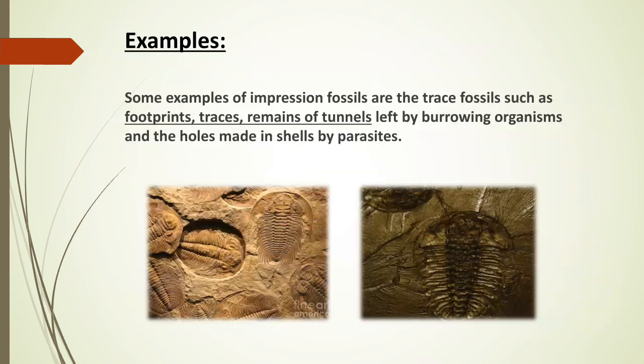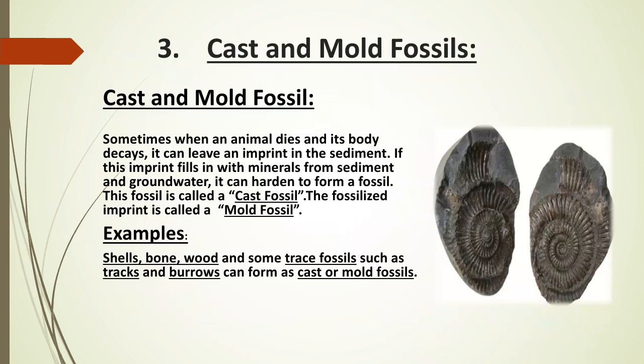Some examples of impression fossils include footprints, presses, and shells of organisms. Cast and mold fossils: sometimes when an animal dies, its body decays and can leave an imprint in the sediment. If this imprint is filled with minerals or other materials from sediment and groundwater, it can harden to form a fossil called a cast fossil. The fossilized imprint itself is called a mold fossil. Shell, bone, wood, and trace fossils such as tracks and burrows can form cast and mold fossils.